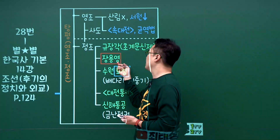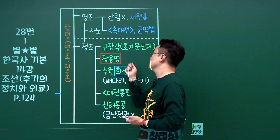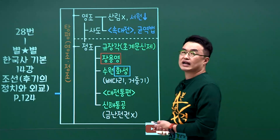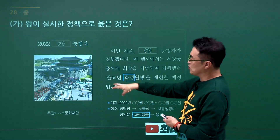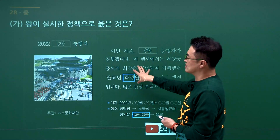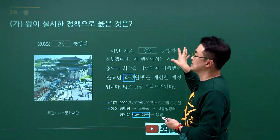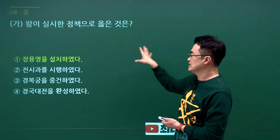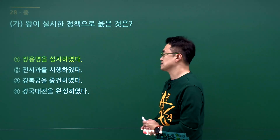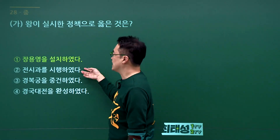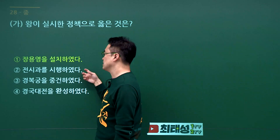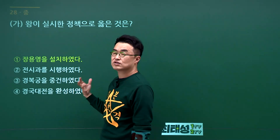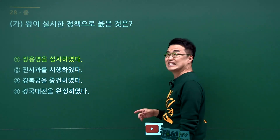정조 문제입니다. 정조는 수원 화성을 지었고, 규장각과 초계문신제, 장용영 설치 등의 업적이 있습니다. 문제에서 수원 화성이 보이고 있으니 이 왕은 정조입니다. 정조가 실시한 정책은 장용영 설치로 1번이 정답입니다. 전시과 시행은 고려시대, 경복궁 중건은 흥선대원군 때, 경국대전 완성은 성종 때입니다. 정답은 1번입니다.